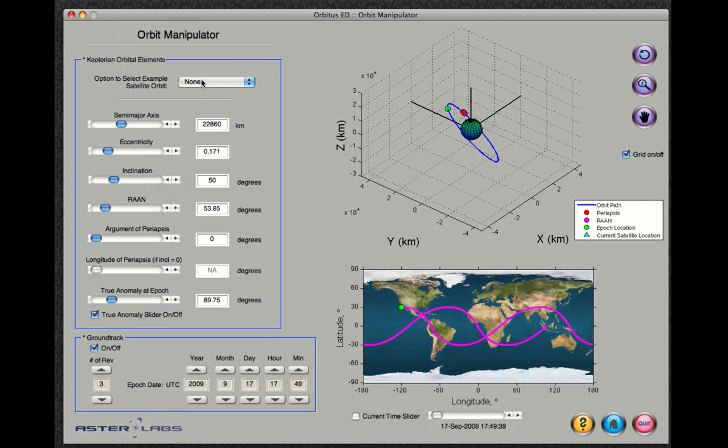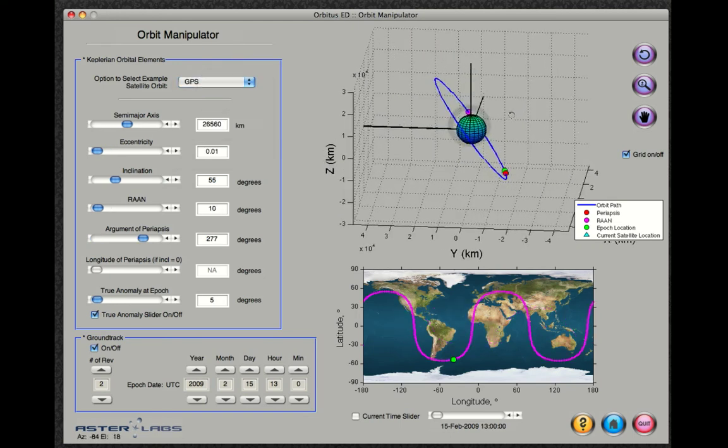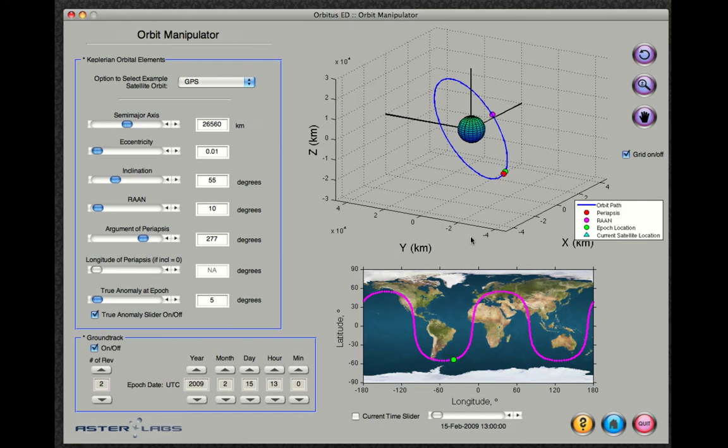You might want to view some example satellite orbits and their ground tracks for known constellations such as GPS. When you select one of these, its orbit is plotted above and its ground track below.